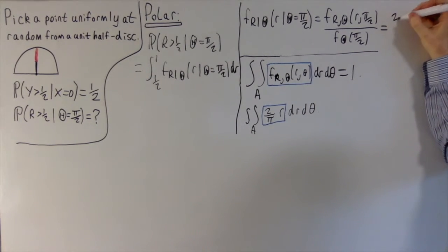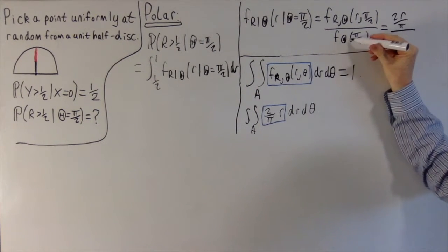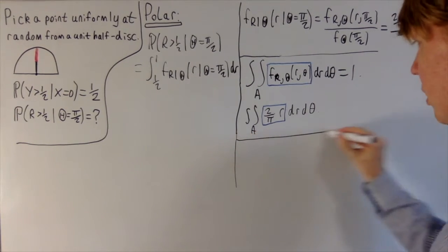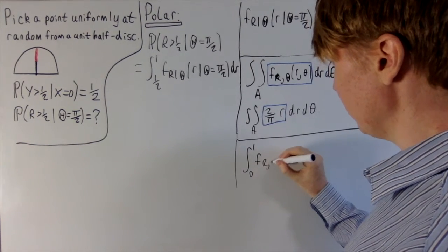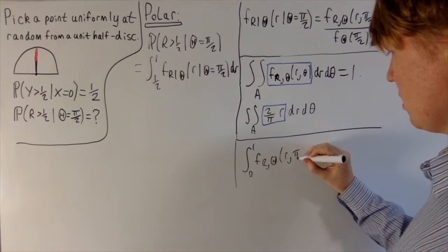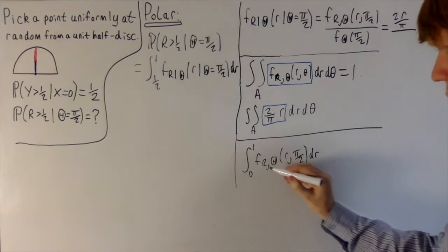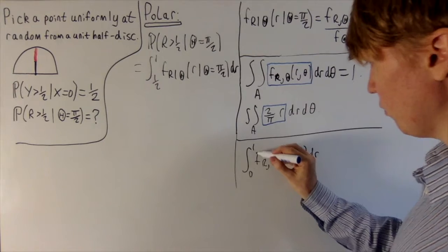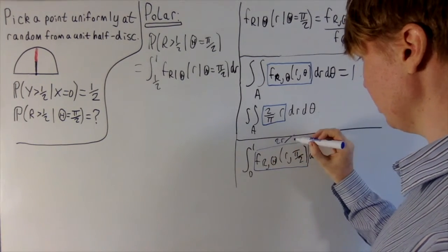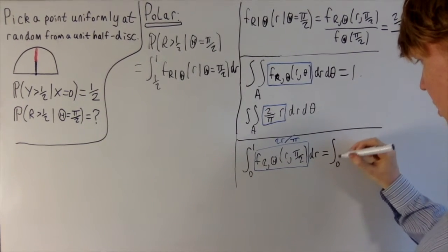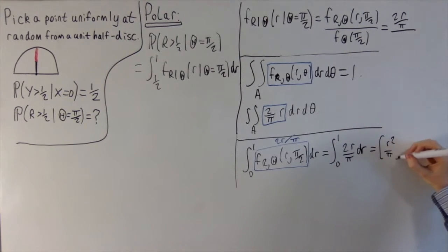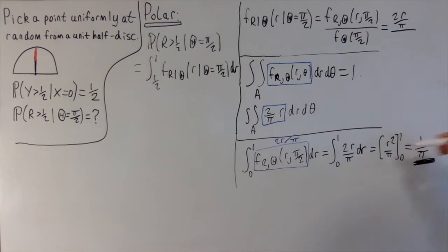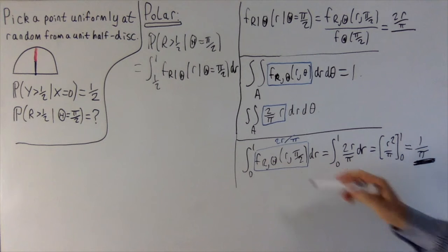Now we calculate the marginal PDF for theta at pi over 2 by integrating out r from 0 to 1. We integrate the joint PDF, 2r over pi, with respect to r from 0 to 1. This gives r squared over pi evaluated between 0 and 1, which is 1 over pi.